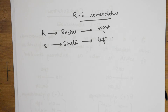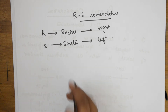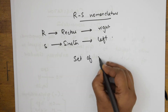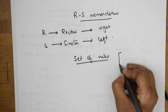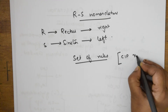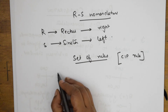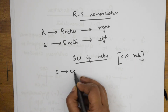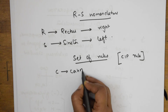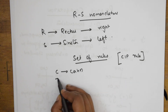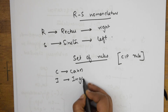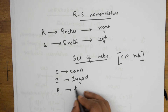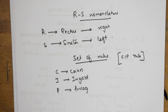In RS nomenclature, the first important thing to remember is that before going into the examples, there are certain set of rules you have to follow. These are called CIP rules — C-I-P rule. CIP stands for Cahn, Ingold, and Prelog. These were given by them, and using this particular rule, we assign a sequence of priority to four atoms.